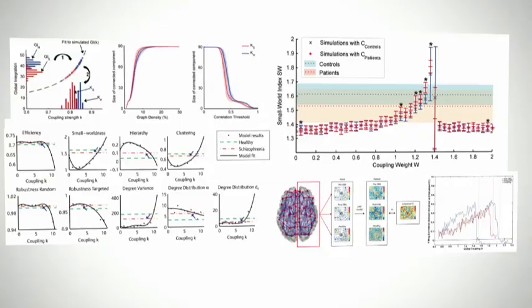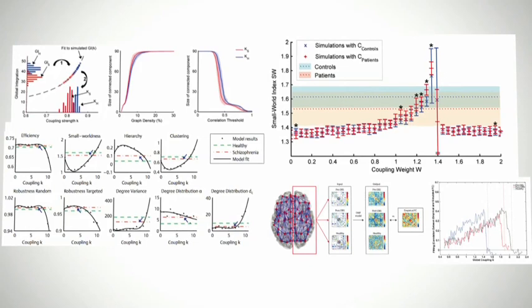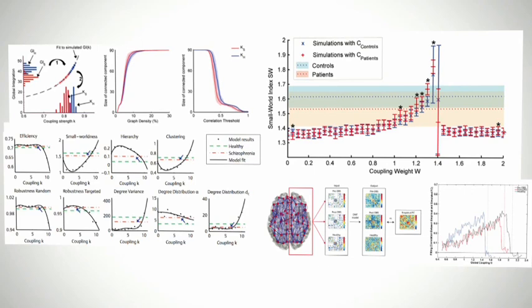This is where whole brain computational modeling is very useful and is demonstrated by studies in schizophrenia. They were used to simulate functional networks in schizophrenics and healthy participants and predict the topological changes.